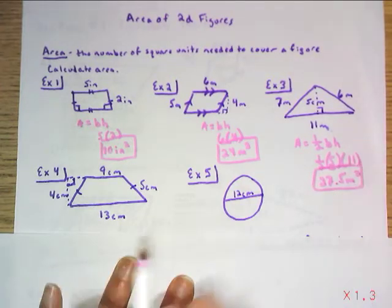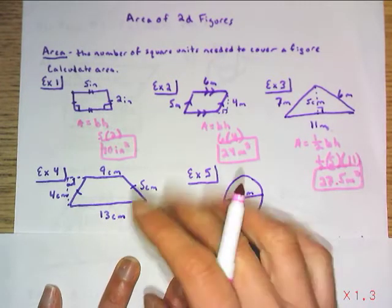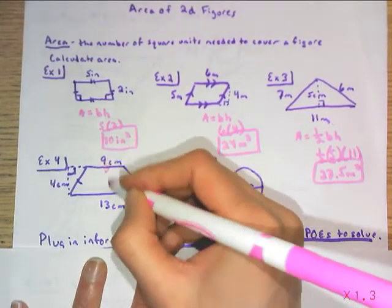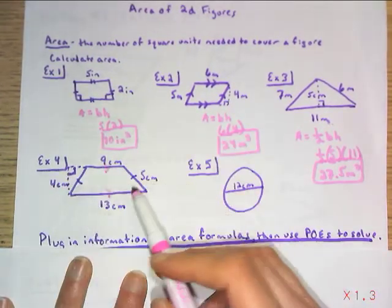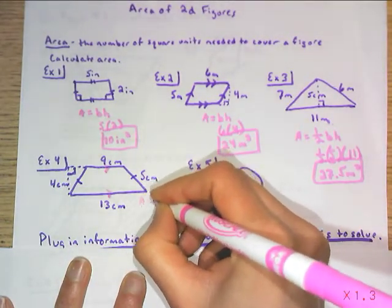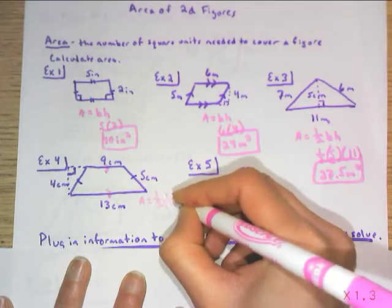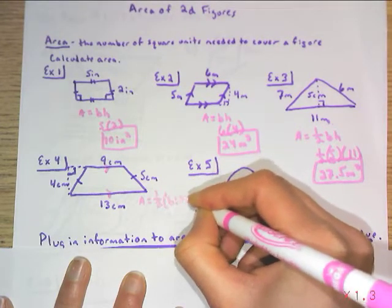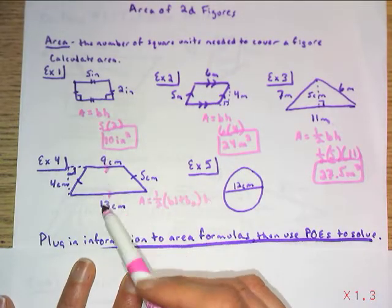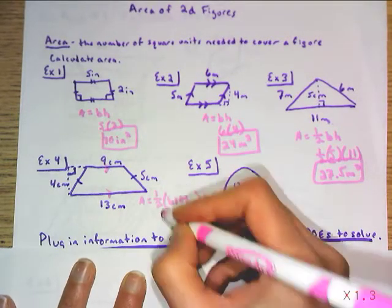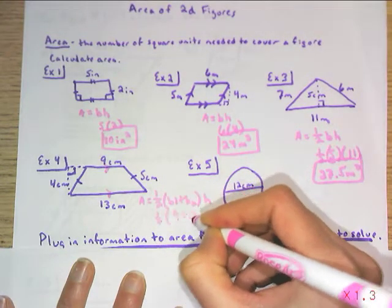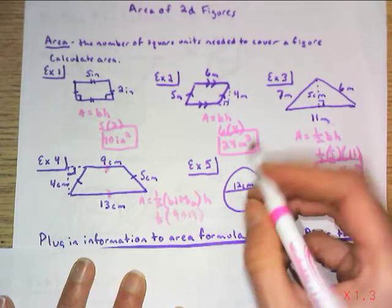Our trapezoid is a little bit different because he has two bases because both are parallel here and perpendicular to my height, which is on the outside here of 4. So your formula is going to look like this. It's half the base 1 plus base 2, then times your height. So essentially, it's the average base length times the height. So if I half my sum of the bases and then multiply it by my height of 4,